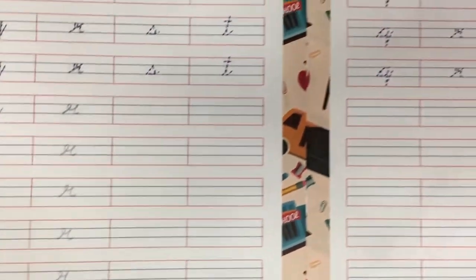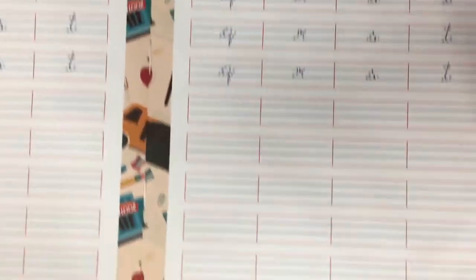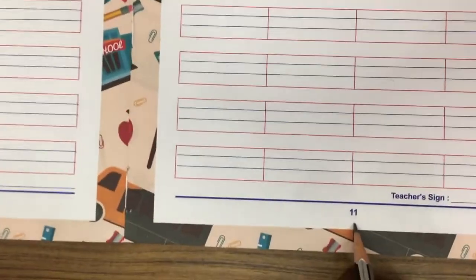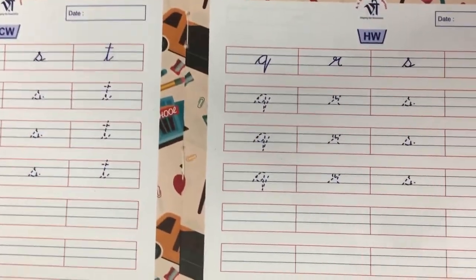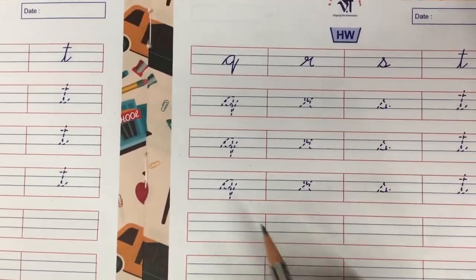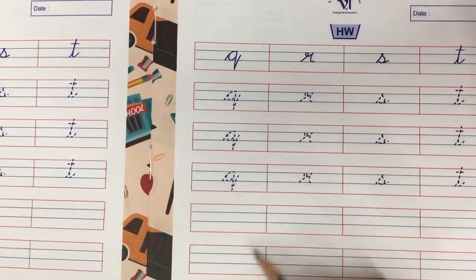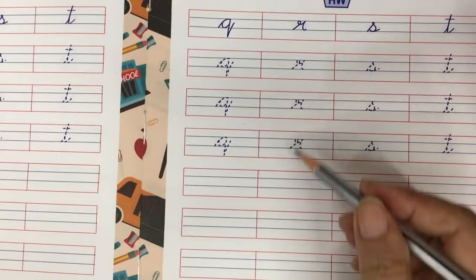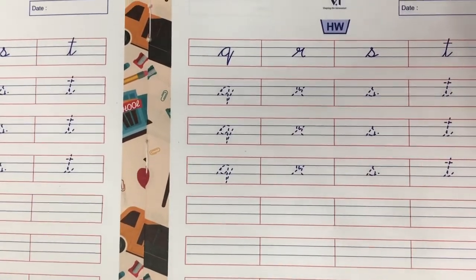Now look here — all of you look at page number 11. In this page you will complete cursive Q and R with the help of your parents. So today we learned P, Q and R. Bye bye!